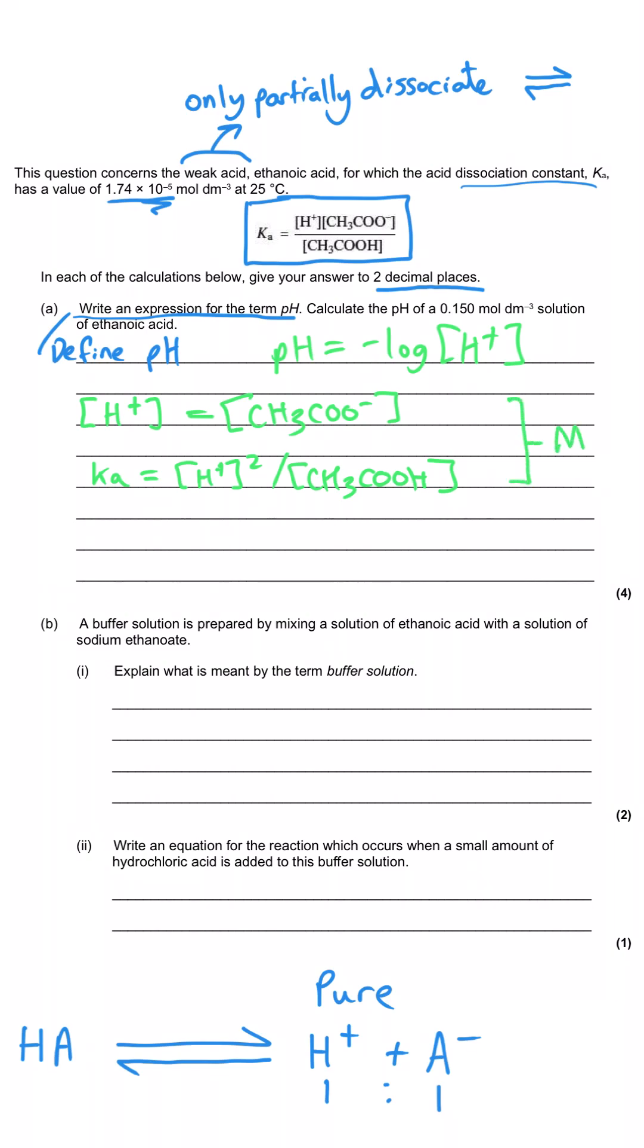Then the third mark will be for substituting these values in. We in fact only need two values now. We need our Ka, which we've got here, and we've got the concentration of the ethanoic acid here. So once we rearrange the Ka expression, we get H plus squared is equal to Ka multiplied by the ethanoic acid concentration, and then H plus is the square root of that product. And so then we plug our numbers in and we get the square root of 1.74 times 10 to the minus 5 multiplied by 0.15, which then comes out at 1.62 times 10 to the minus 3. And as we've already declared, pH is negative log of H plus, so we just need to take the negative log of our hydrogen ion concentration, and that gives us a pH of 2.79 to 2 decimal places.